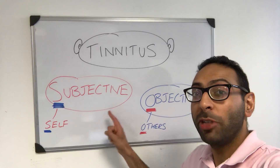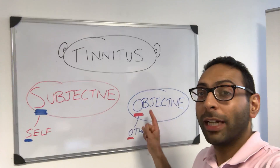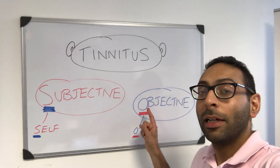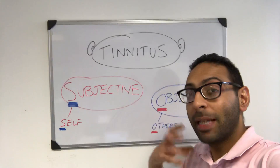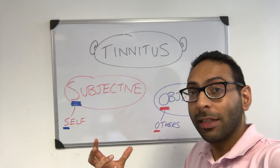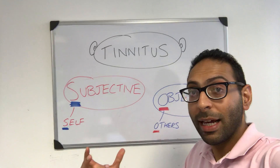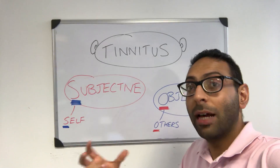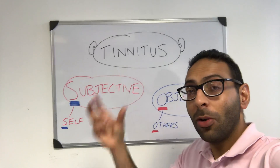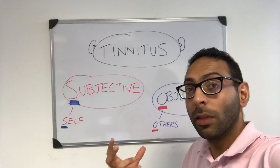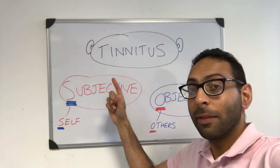What's the difference between subjective tinnitus and objective tinnitus? Remember, tinnitus itself is just the perception of sound that isn't really externally there. It can be things like a hissing sound, buzzing sound, ringing of bells — there's a whole list of different sounds that can all come under the term tinnitus.